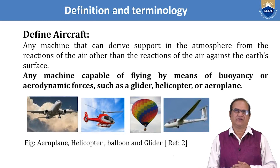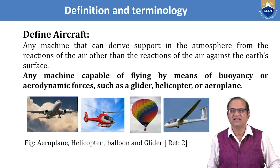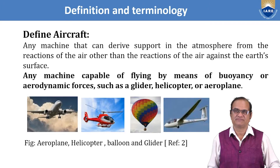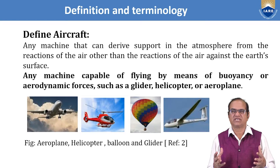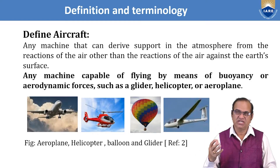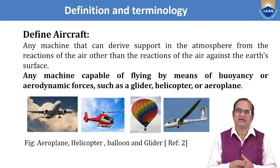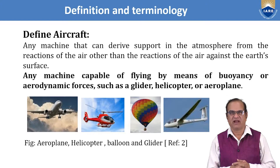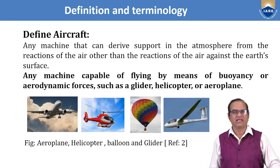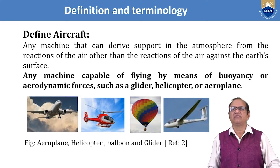What is an aircraft? Any machine that can derive support in the atmosphere from the reaction of the air, other than the reaction of the air against the earth surface. Any vehicle moving in air that is able to sustain itself and go away from the earth by the help of relative motion between the vehicle and the air is called an aircraft. Any machine capable of flying by means of buoyancy or aerodynamic forces — such as a glider, helicopter, or aeroplane — is called an aircraft.